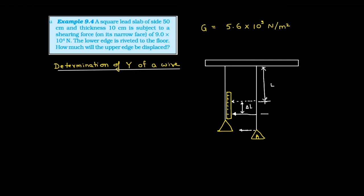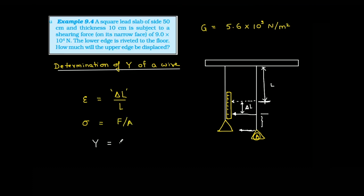Delta l is for this particular length. If you want it for the entire length, attach the pointer at the end. If you attach at the bottom, delta l will be more. But if you attach at the bottom, you can say strain is delta l by l. You know delta l and l, and you know the load, so sigma is F/A = mg/A. Young's modulus equals sigma divided by epsilon.